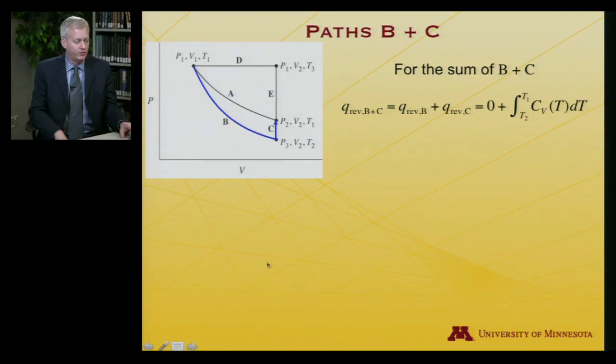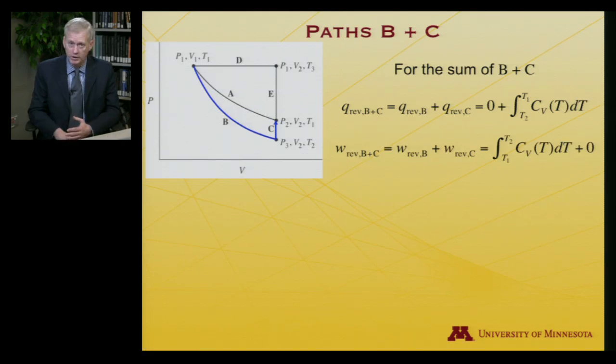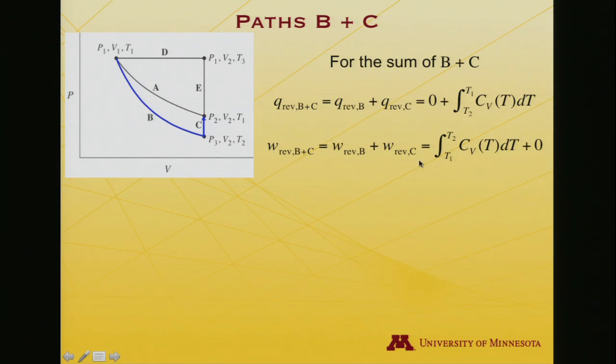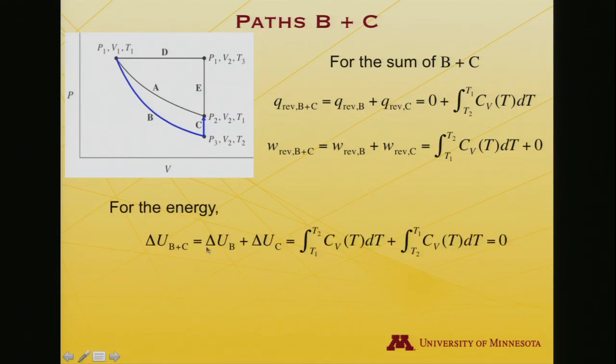What I'm interested in is the sum of these two. That's the road I took to get to the final destination. And so what was the reversible heat for the sum of path B plus C? Well, remember, B was adiabatic. For that, the heat was zero. And along C, it's the integral from T2 to T1 of the heat capacity, dT. What about the work? Well, that's the work along B plus the work along C. The work along C was constant volume, so it's zero. What was it along the first path? It was integral T1 to T2, CV.